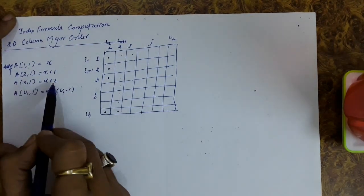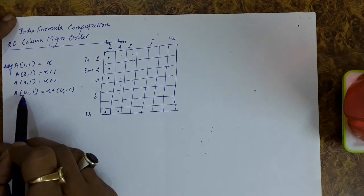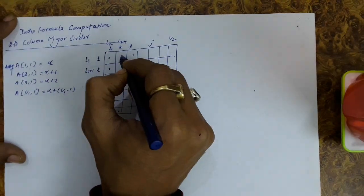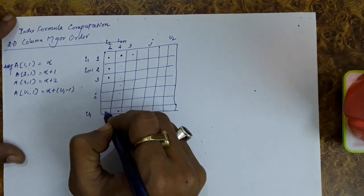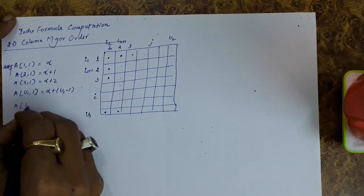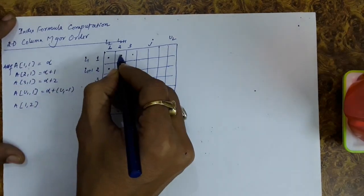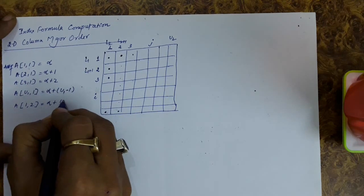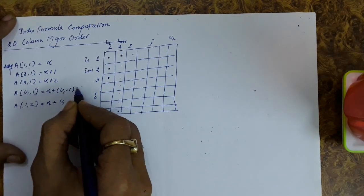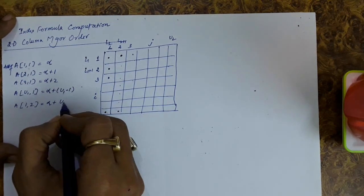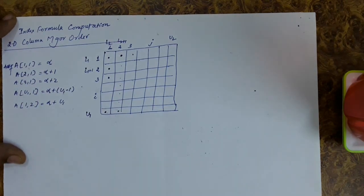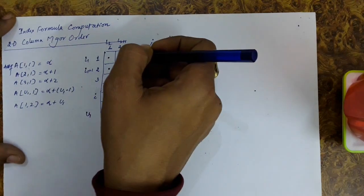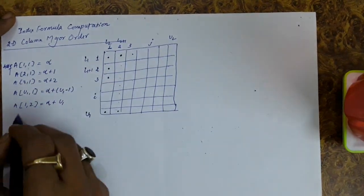The address of a12 — the first row, second column element — is one more than the address of a(u1,1), so it equals alpha + u1 - 1 + 1 = alpha + u1. This makes sense because we have stored all u1 elements of the first column before moving to the second column.